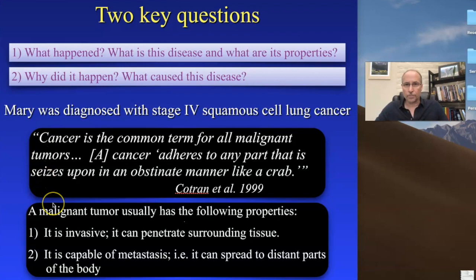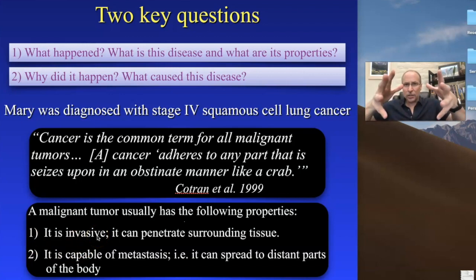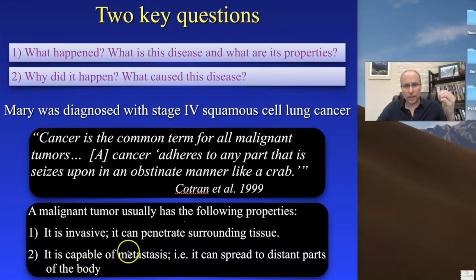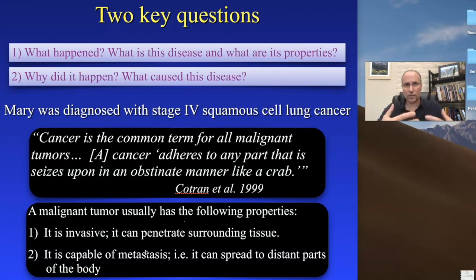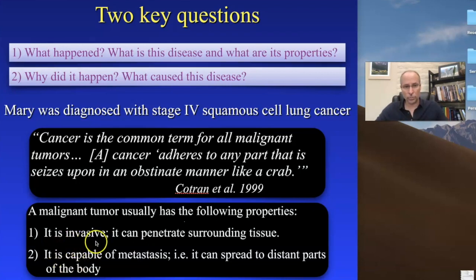A malignant tumor is any tumor that has two properties. First, it's invasive — it acts like a fungus, growing into the tissue rather than just pushing it out. Second, it's capable of moving from one place of the body to another. Diseases that can do that have what we call metastasis — the ability to metastasize. A malignant tumor is characterized by these two properties: invasiveness and metastasis.